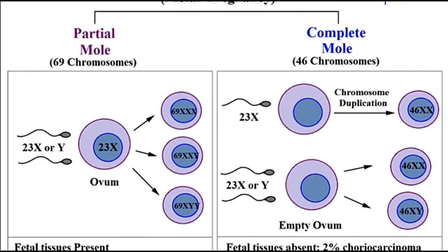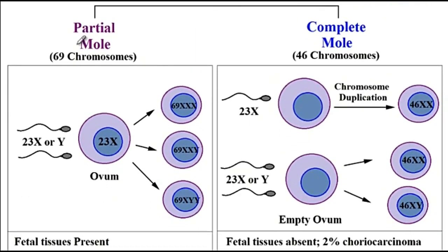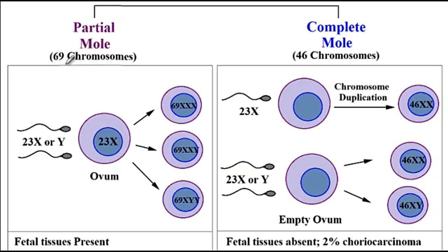With the partial mole, one egg is being fertilized by two sperms. We now have three times 23 chromosomes, giving rise to 69 chromosomes. The type of combinations that we can get is one X from the egg, and then there could be an X or a Y coming from the sperms, so the combinations could be 69XXX, 69XXY, or 69XYY.